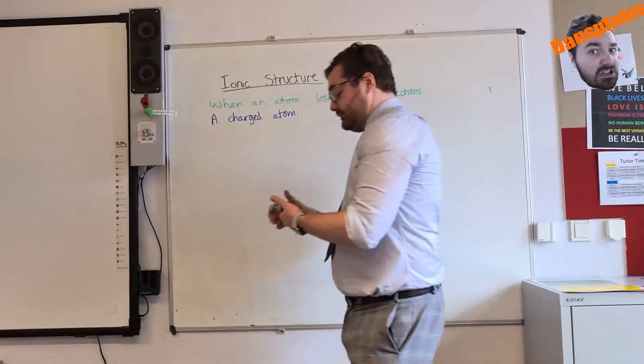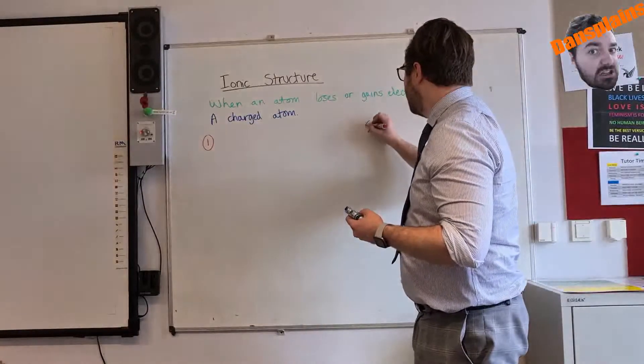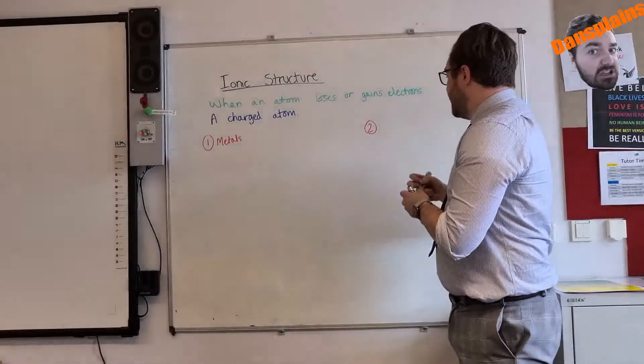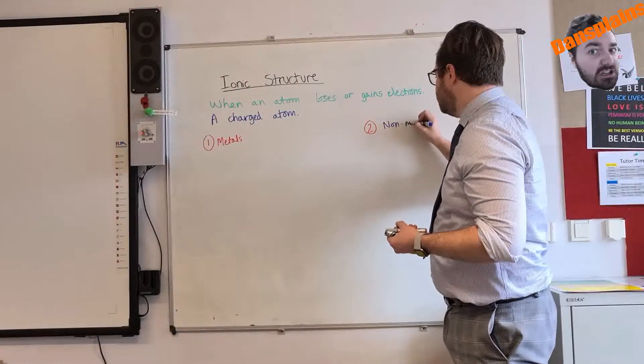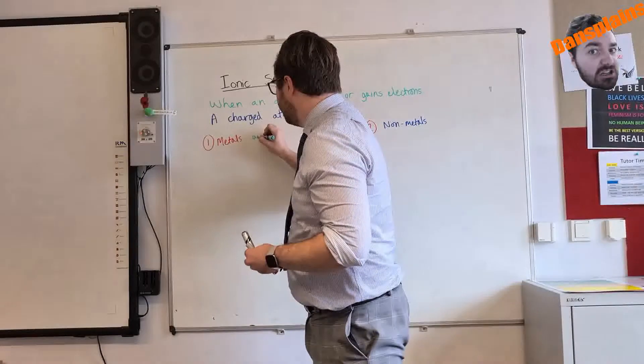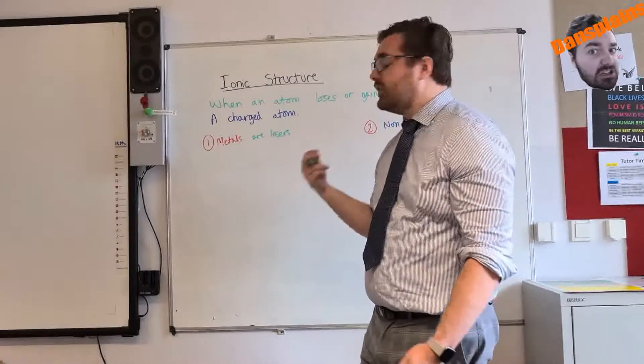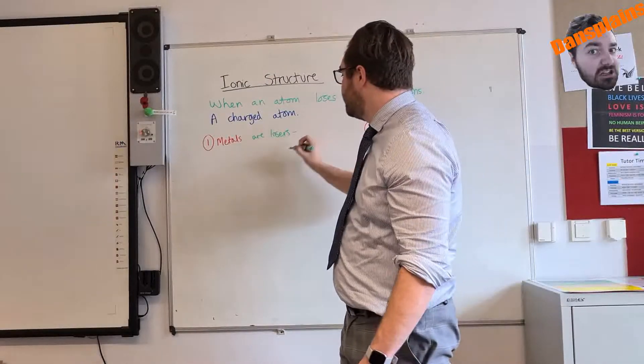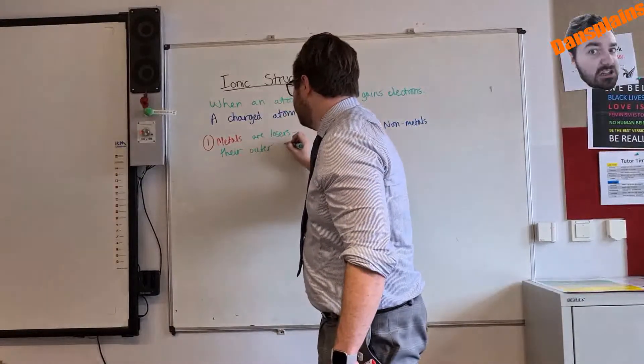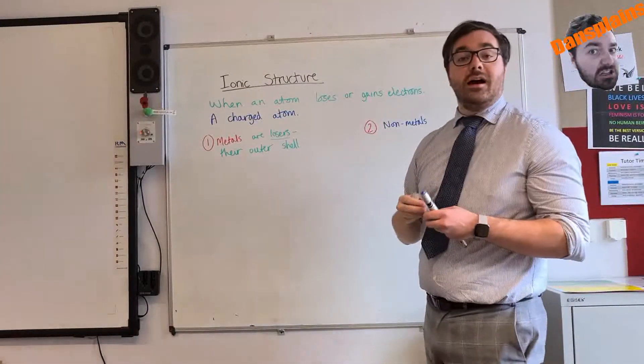Now the first one we have is metals. I do this in two different rules - one is for metals, the other is for non-metals. The first rule is metals are losers. If we think about it, what are they going to lose? They're going to lose their outer shell.